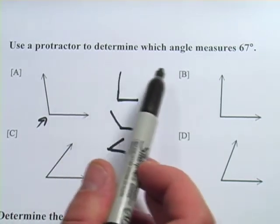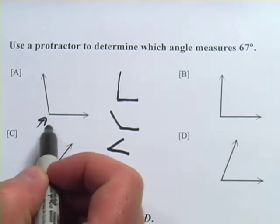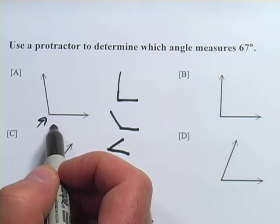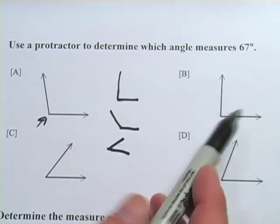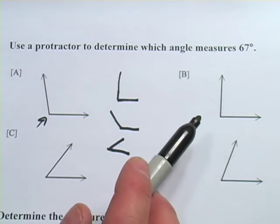This problem says use a protractor to determine which angle measures 67 degrees. So we wouldn't have to waste our time on A anyway because it's greater than 90 degrees, and that's not going to be 67. B, well, it looks like it might be a smidge less than 90, but not much.